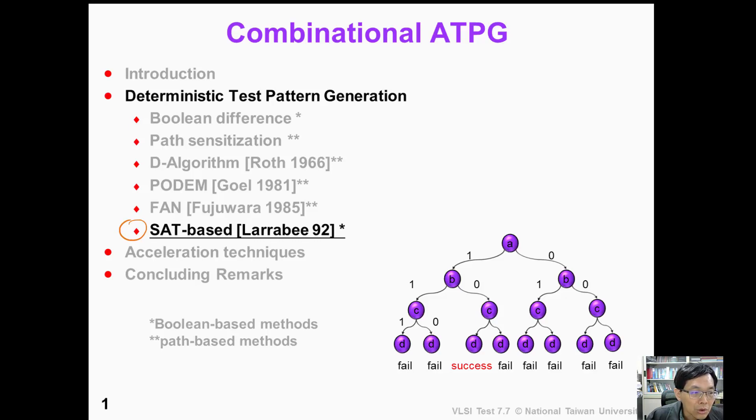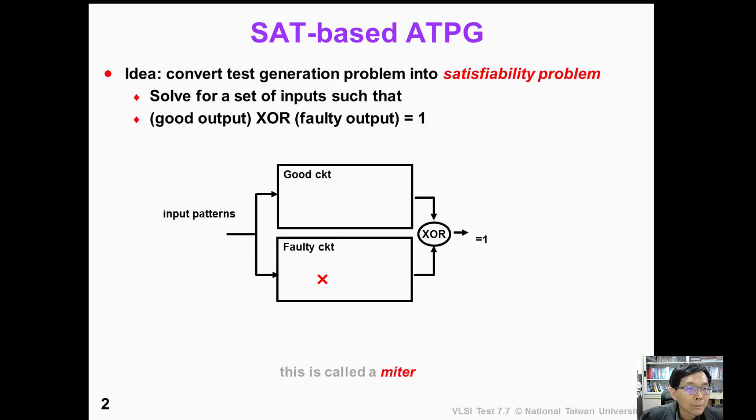The SAT-based ATPG is a Boolean-based method to solve the ATPG problem. Because the ATPG problem is essentially a satisfiability problem, we can simply convert the test generation problem into a satisfiability problem.